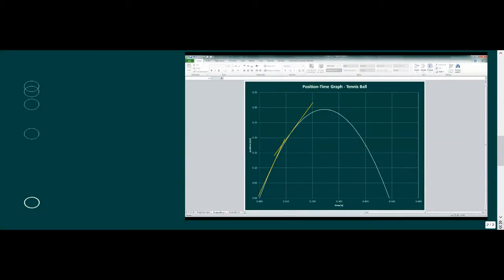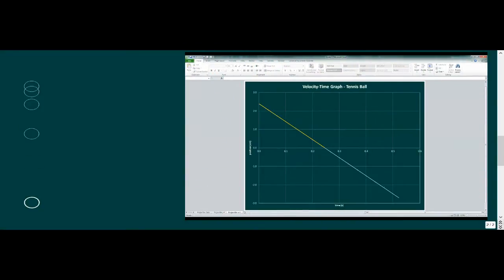We've actually seen projectile motion already when we looked at the example of a tennis ball in the uniform motion video. And we saw these motion graphs where the position time curve had a changing slope that reverses direction, and a velocity time curve with a uniformly negative slope, indicating a negative acceleration.